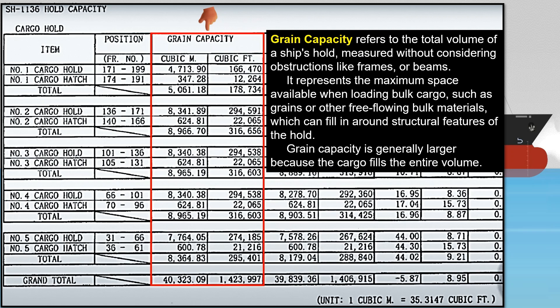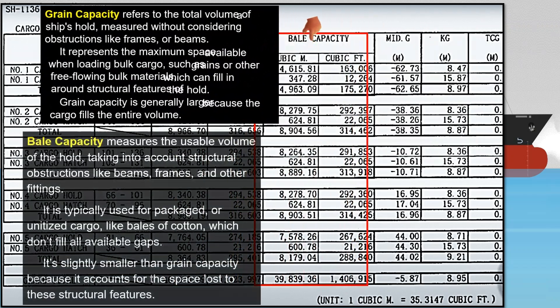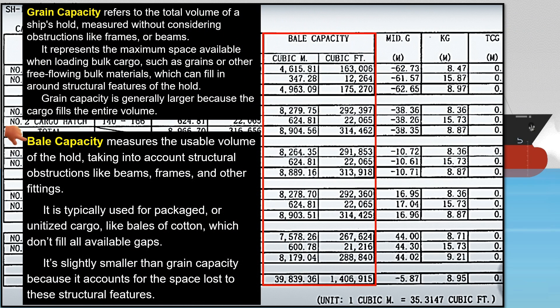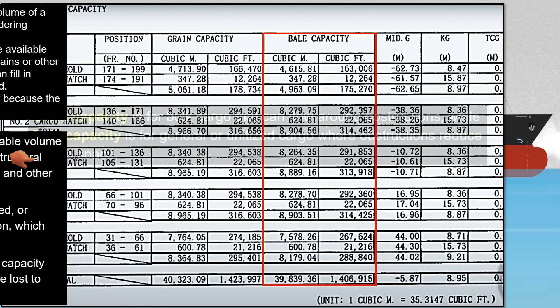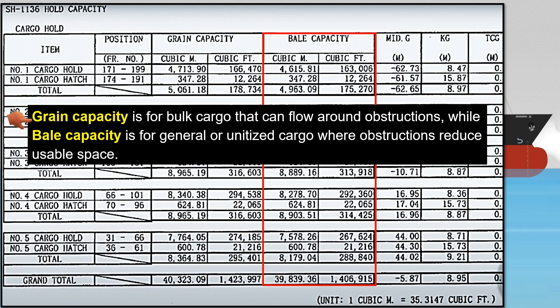Grain capacity refers to the total volume of a ship's hold measured without considering obstructions like frames or beams. It represents the maximum space available when loading bulk cargo such as grains or other free-flowing bulk materials, which can fill in around structural features of the hold. Grain capacity is generally larger because the cargo fills the entire volume. Bale capacity measures the usable volume of the hold taking into account structural obstructions like beams, frames, and other fittings. It is typically used for packaged or unitized cargo like bales of cotton, and is slightly smaller than grain capacity because it accounts for space lost to structural features.